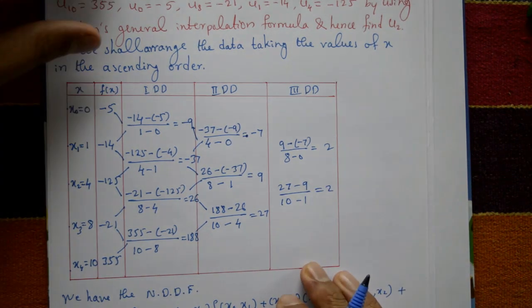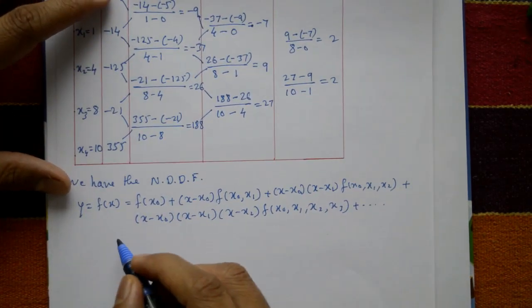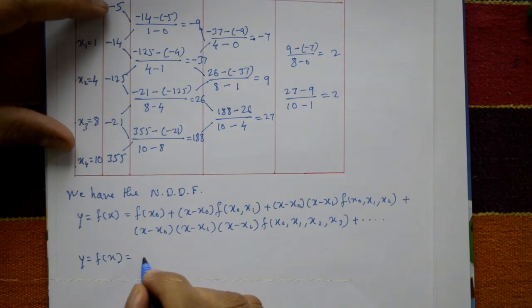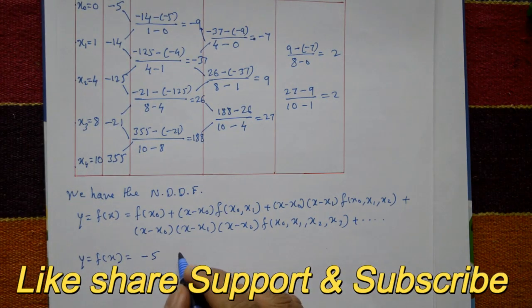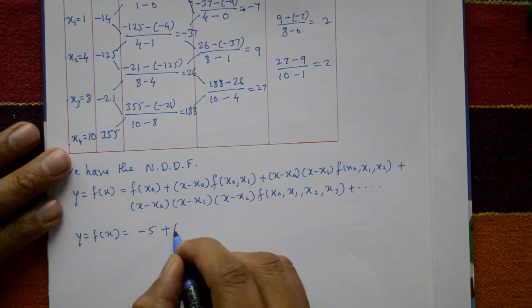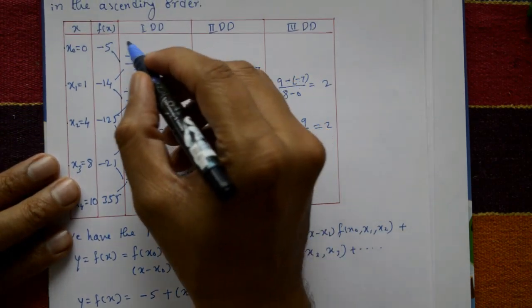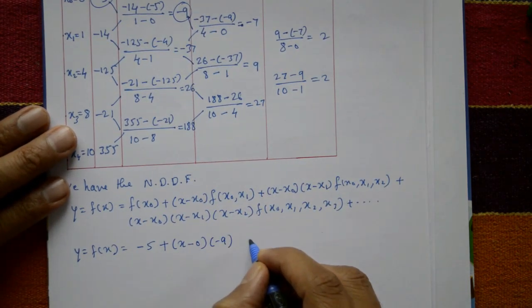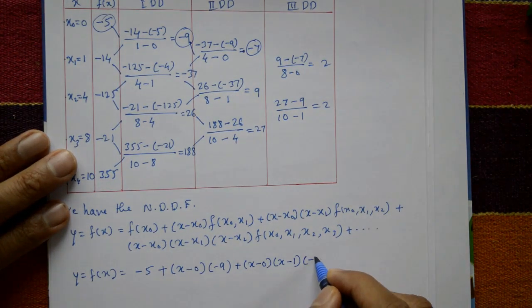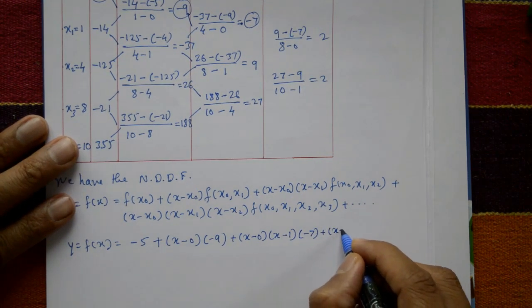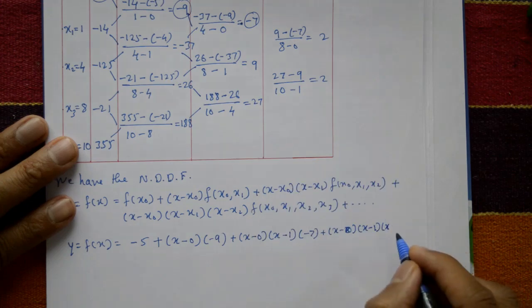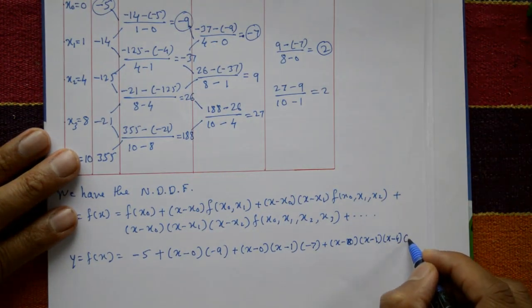The fourth divided difference is 2 - 2 = 0, so it is not possible to go further. Now using the formula: F(x) = F(X0) + (x - X0)·F[X0,X1] + (x - X0)(x - X1)·F[X0,X1,X2] + (x - X0)(x - X1)(x - X2)·F[X0,X1,X2,X3]. Substituting: -5 + (x - 0)(-9) + (x - 0)(x - 1)(-7) + (x - 0)(x - 1)(x - 4)(2).